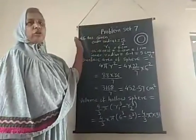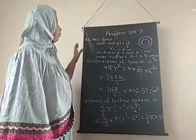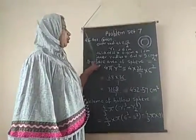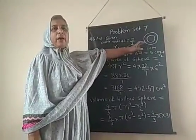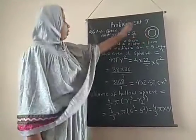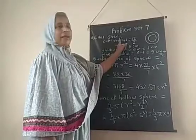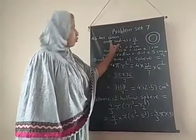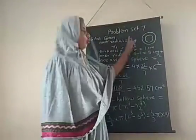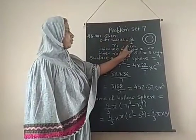Problem set question number 6. In this question, we are finding the surface area of the given sphere and the mass of the sphere. The outer diameter of the sphere is given as 12 cm, so the outer radius is half of the diameter, that is 6 cm. Let that radius be R1.